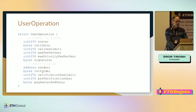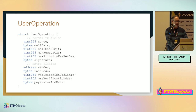Let's see what we have in a user operation. A user operation first has all the fields you see from a normal transaction: the call data itself, gas limit, gas values, signature, and nonce — except that the definition of nonce and signature are completely open to the wallet implementation. There are some extra fields we add: the sender, since we can't assume the signature is ECDSA and can't recover the sender address from the signature, we have to specify the sender address explicitly. If the wallet is not yet deployed, we have the init code, which is used to create the wallet. And we have several extra gas fields: a verification gas limit for the verification step, and a pre-verification gas value to account for things you can't check on-chain like call data cost.